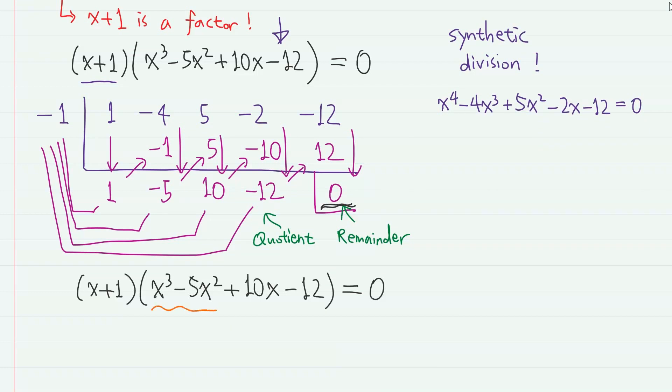Now let us factorize this part. We have to guess another root to find additional factor. And if this polynomial can be factorized, the constant term of the factor must be the divisor of this constant term minus 12. So we can test x equals 2, minus 2, 3, minus 3, etc.